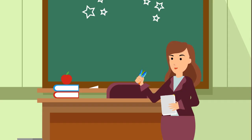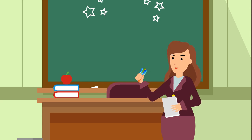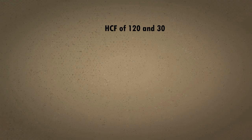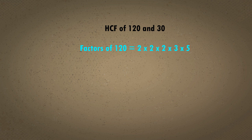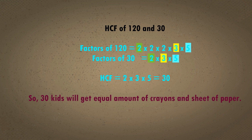An art teacher has 120 crayons and 30 pieces of paper to give to her students. What is the largest number of students she can have in her class so that each student gets an equal number of crayons and an equal number of pieces of paper? We are going to divide the crayons and the paper, so we will use HCF. Factors of 120 are 2 × 2 × 2 × 3 × 5. Factors of 30 are 2 × 3 × 5. So, 30 kids will get an equal amount of crayons and paper.